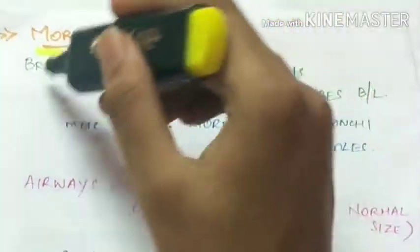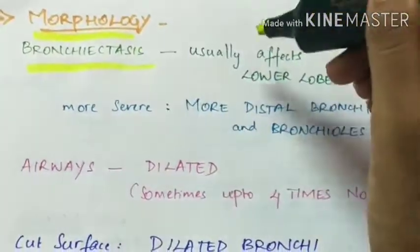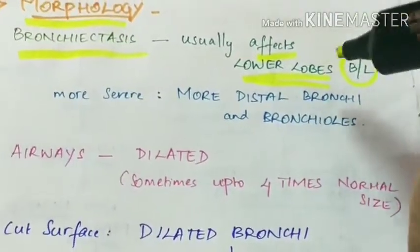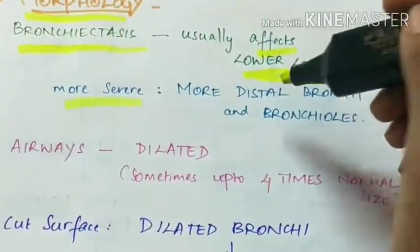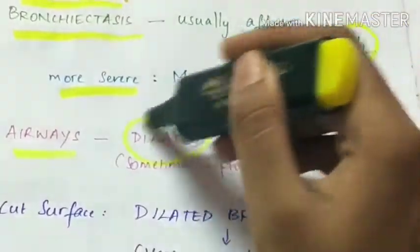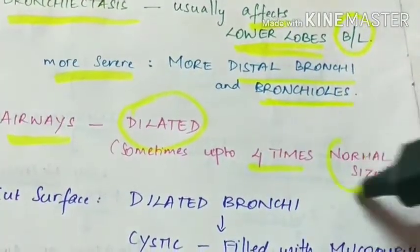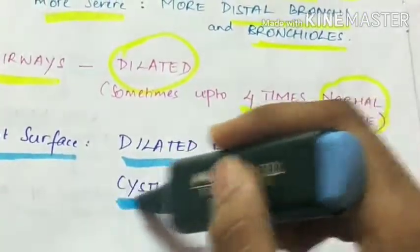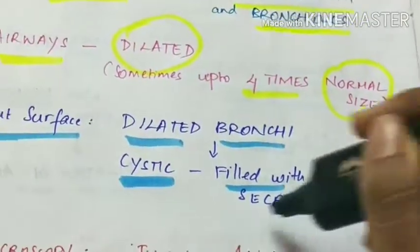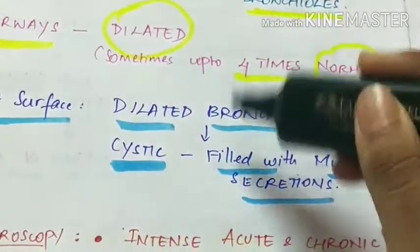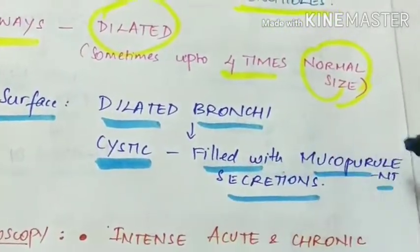Morphology of bronchiectasis: the condition usually affects the lower lobes bilaterally and is more severe when distal bronchi and bronchioles are involved. The airways are dilated sometimes up to four times the normal size. On the cut section of the lung, there are dilated bronchi which are cystic and filled with mucopurulent secretions.